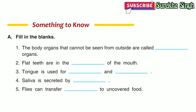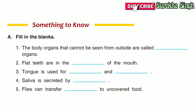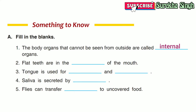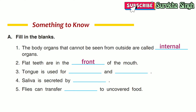Fill in the blanks. 1. The body organs that cannot be seen from outside are called internal organs. 2. Teeth that are in the front of the mouth. 3. Tongue is used for tasting and speaking.